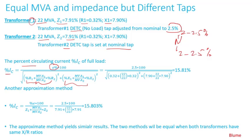Specifically, you take the percent resistance of Transformer 1 plus the MVA of Transformer 1 divided by the MVA of Transformer 2 times the percent resistance of Transformer 2, squared, plus the same ratio applied to reactances, squared. Plugging in the numbers — with a voltage difference of 2.5% — you get 15.81%.